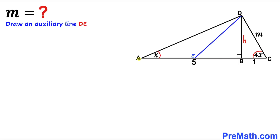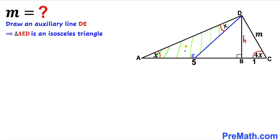To make our job easier, I have drawn auxiliary line DE such that this angle is congruent to this angle. If this angle is X, this angle is X as well. So therefore we can see that triangle AED is an isosceles triangle, and therefore this side length has got to be equal to this side length.